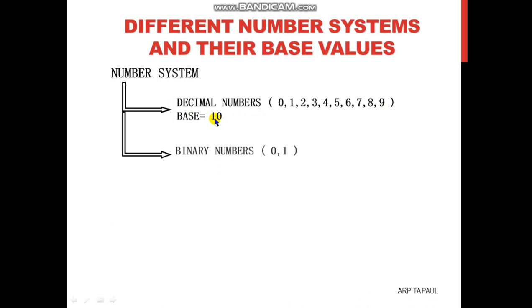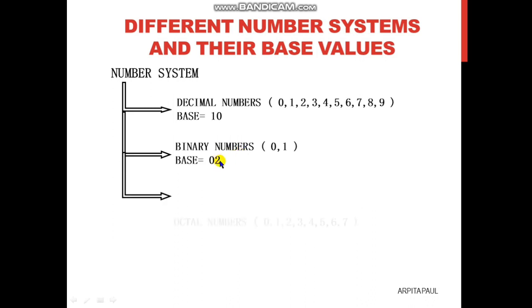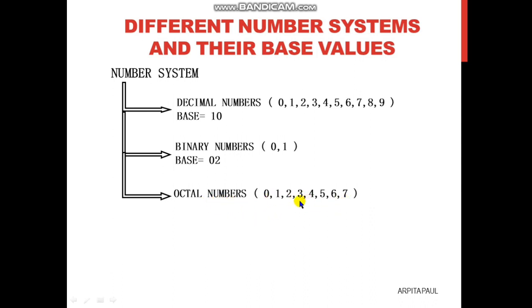The next one is binary numbers. 'Bi' represents 2, and you can see two numbers are present: 0 and 1. As there are two numbers present in the binary number system, the base of the binary number system is 2. Next one is octal numbers. Octal represents 8. The numbers 0 to 7 — these 8 numbers are present in octal. So the base of the octal number system is 8.